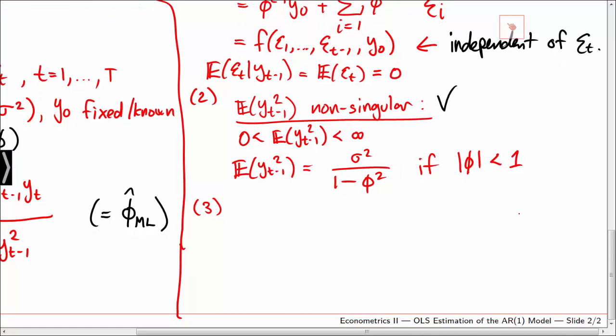Lastly, note that by assumption we have that phi is numerically less than 1 such that the process yt is stationary and weakly dependent. So by assumption condition 3 is satisfied.